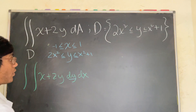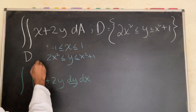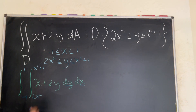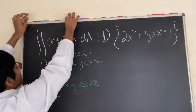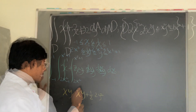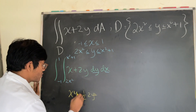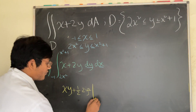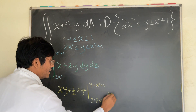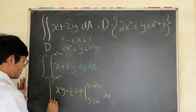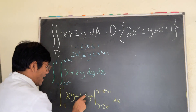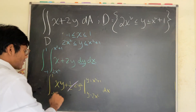So the limits for y are from 2x squared to x squared plus 1, and for x from negative 1 to 1. Now let's integrate with respect to y: that gives us xy plus — integrating 2y gives half of 2y squared — evaluated from y equals 2x squared to y equals x squared plus 1, times dx, with the outer integral from negative 1 to 1.